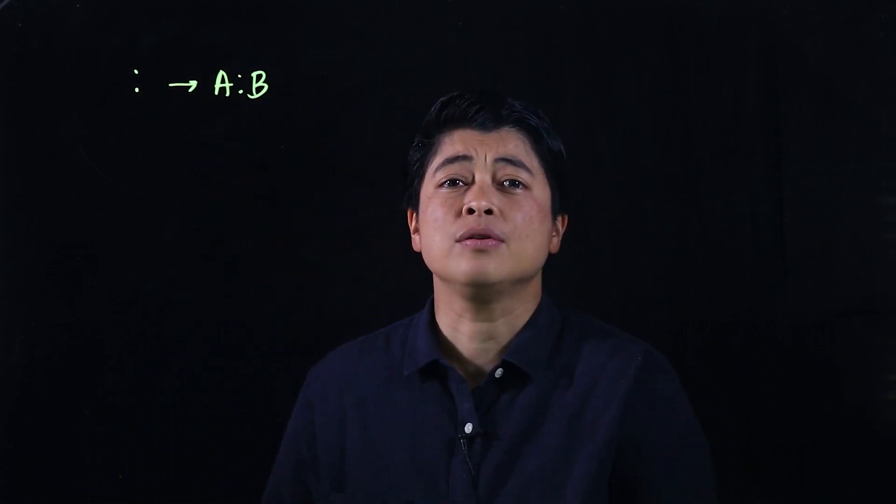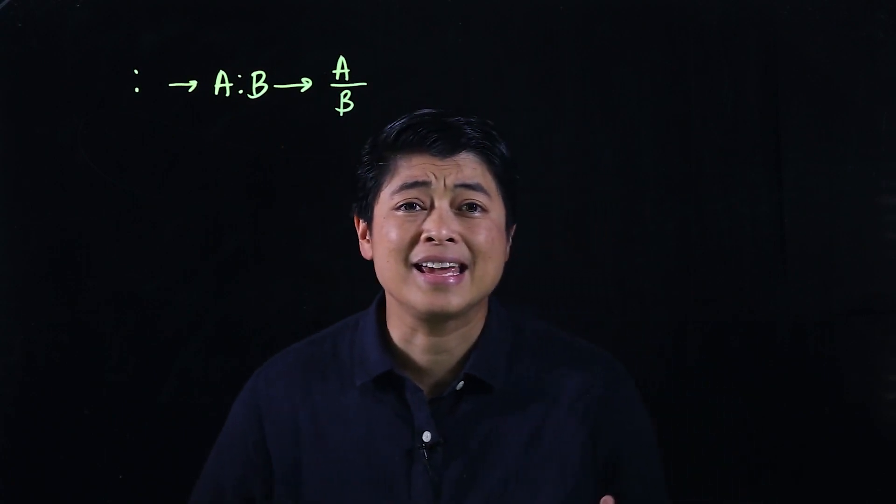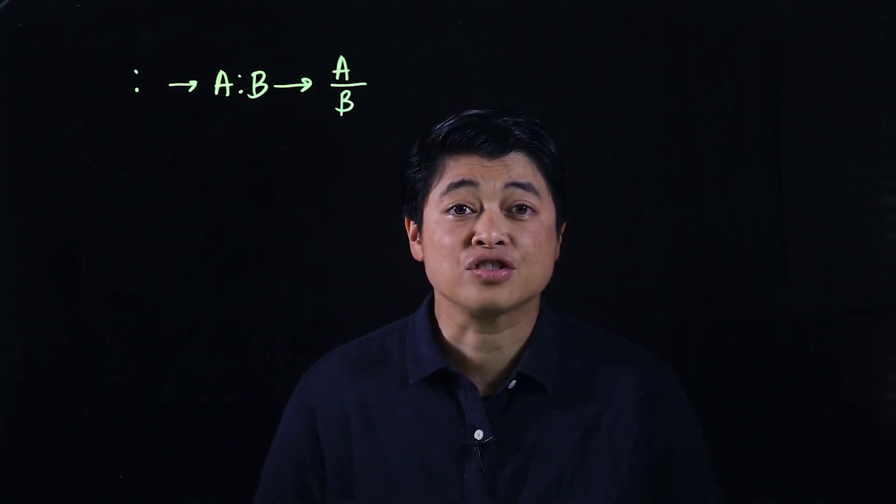Module 2 covers two chapters on ratio and percentage. We'll begin with Chapter 3, Lesson 1, which is ratio and fractions. Recall from grade 5 that a ratio is symbolized as a colon — so if it says the ratio of a to b, we write it as a colon b. But we can also write it as a fraction, a over b.